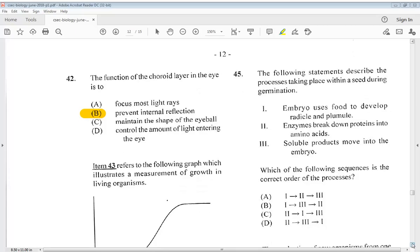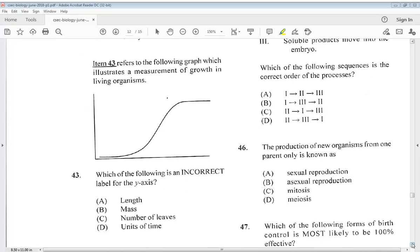Let's go to number 43. Item 43 refers to the following graph which illustrates the measurement of growth in living organisms. Which of the following is an incorrect label for the x-axis? Is it A. Length? B. Mass? C. Number of leaves. Or D. Units of time. So it would be D, units of time.